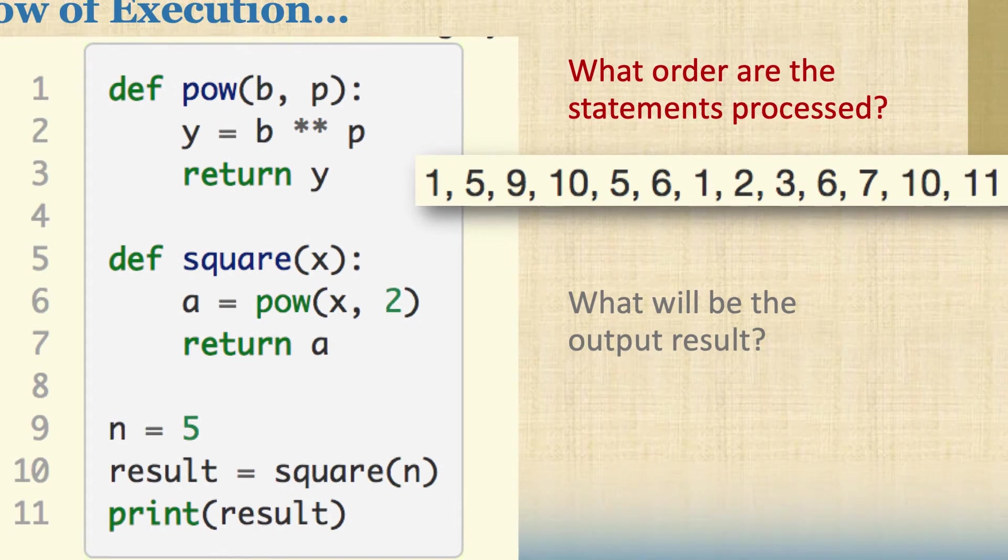So if you just look what happens here, it's going to start at line 1 and it's going to look and say, oh there's a function definition called pow. And it's going to be looking for two numbers, b and p. And then it's going to move on. It's not going to do anything. It's going to jump down and it finds the next function definition.